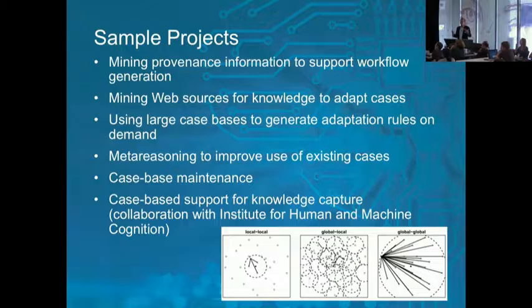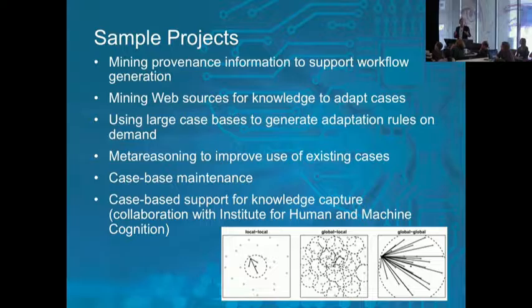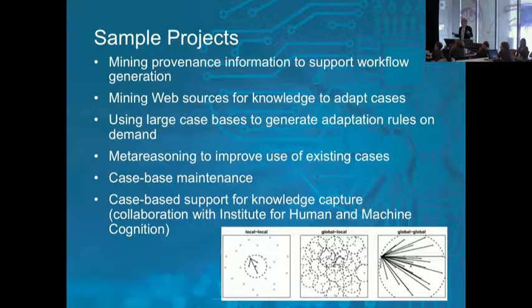One of the big challenges for case-based reasoning is where the knowledge for adapting cases comes from. We've been looking at multiple strategies for that, including mining web sources of information. We've also looked at how, even though you want to reason from few cases, if you have many cases you can apply machine learning approaches to that body of cases to get adaptation knowledge and then deal with novel cases based on that. Another thing we've looked at is meta-reasoning — basically how, given a set of experiences, a system can learn how better to organize those to get the most on-point cases, or how better to adapt them based on that experience.